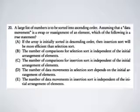Let's see question 20. A large list of numbers is to be sorted into ascending order. Assuming that a data movement is a swap or reassignment of an element, which of the following is a true statement? A: if the array is initially sorted in descending order, then insertion sort will be more efficient than selection sort. B: the number of comparisons for selection sort is independent of the initial arrangement of elements. C: the number of comparisons for insertion sort is independent of the initial arrangement of elements. We know that B and C are definitely not true. D: the number of data movements in selection sort depends on the initial arrangement of elements.